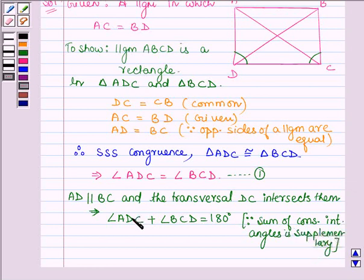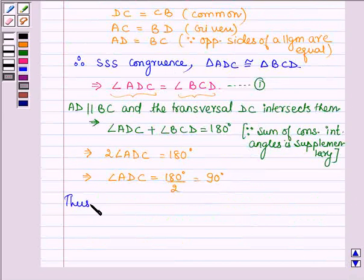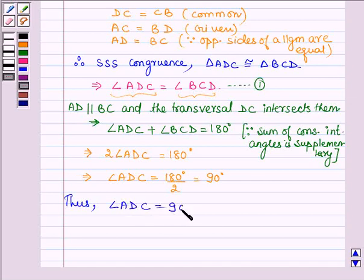And now since angle ADC equals angle BCD, this can be written as 2 times angle ADC equals 180 degrees. Or we can say angle ADC equals 180 degrees divided by 2, which equals 90 degrees. Thus, angle ADC equals 90 degrees.